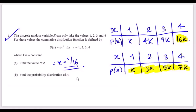For the probability distribution of X, lay out x values 1 through 4. The first probability equals k (the first CDF value). For x = 2, the CDF is 4k, so P(X=2) = 4k - k = 3k. Then P(X=3) = 9k - 4k = 5k, and P(X=4) = 16k - 9k = 7k. As a check, k + 3k + 5k + 7k = 16k, confirming everything sums correctly.